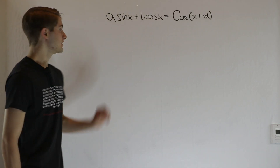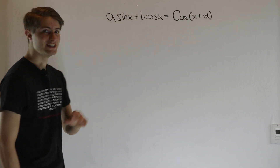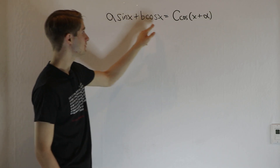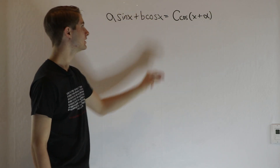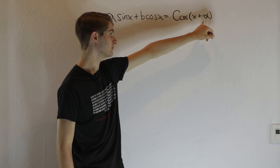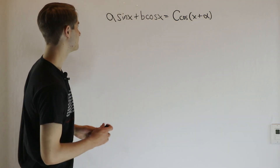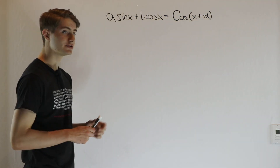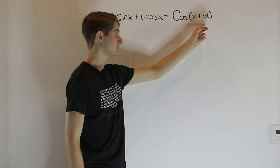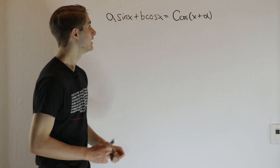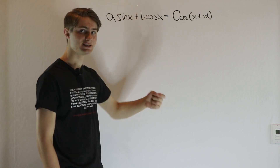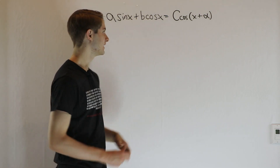We are going to talk about the harmonic addition theorem, which says a sine of x plus b cosine of x can always be written as c cosine of x plus alpha for some c and alpha. In order to see why this is true, we notice cosine of x plus alpha can be expanded out as cosine x cosine alpha minus sine x sine alpha.